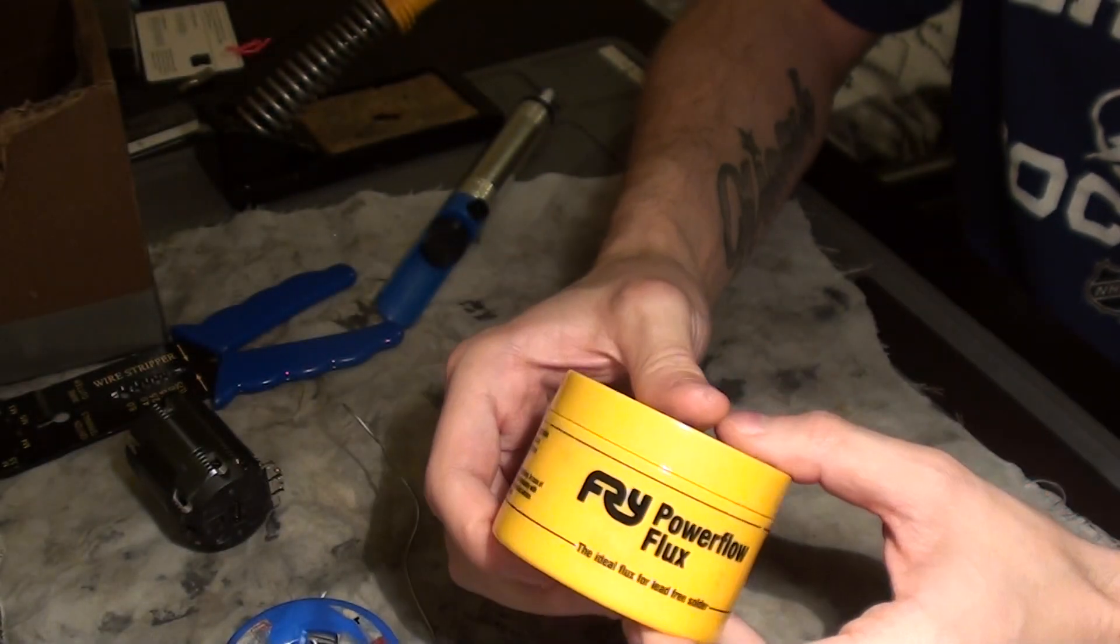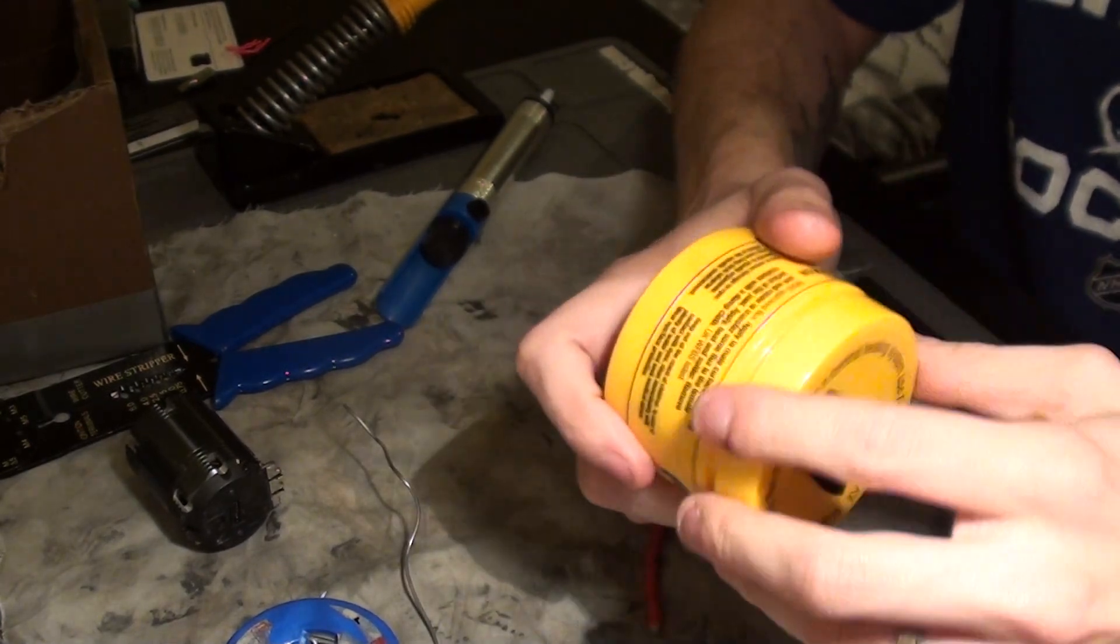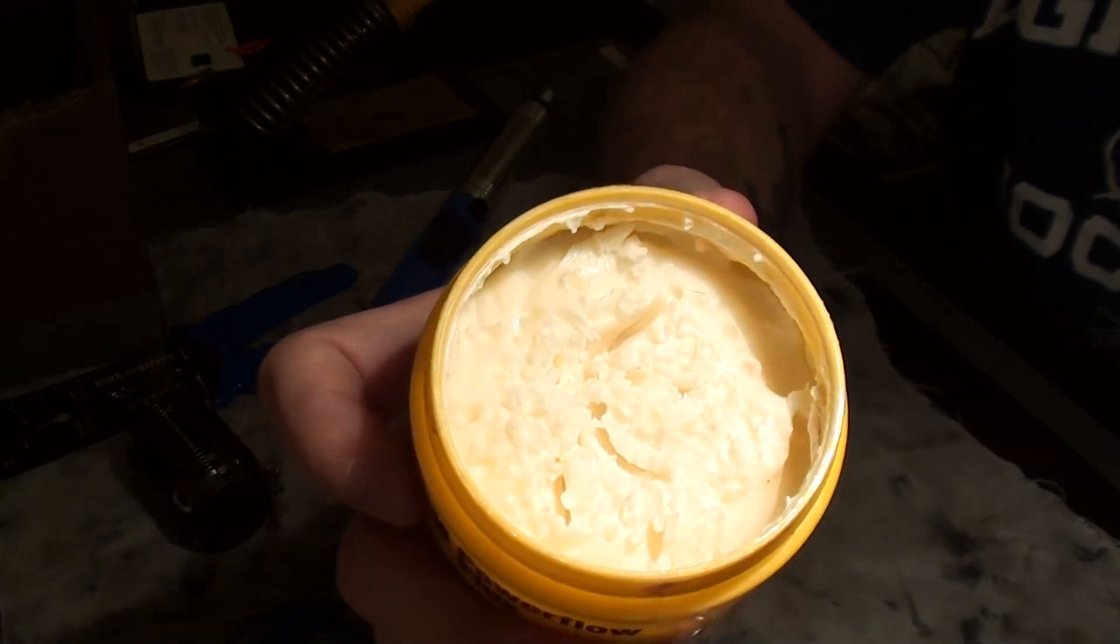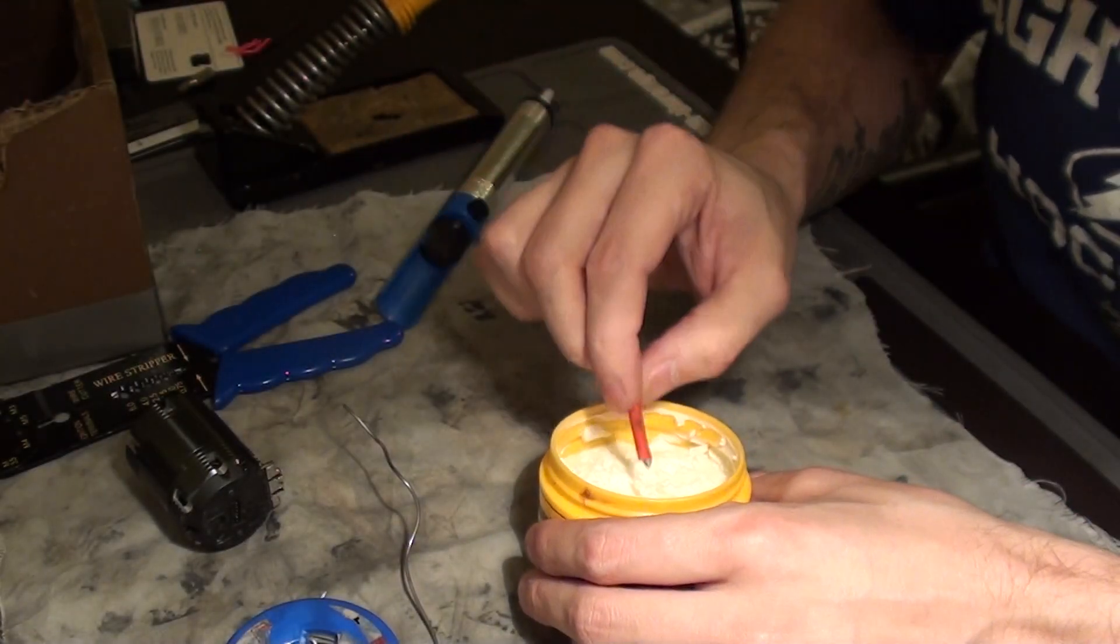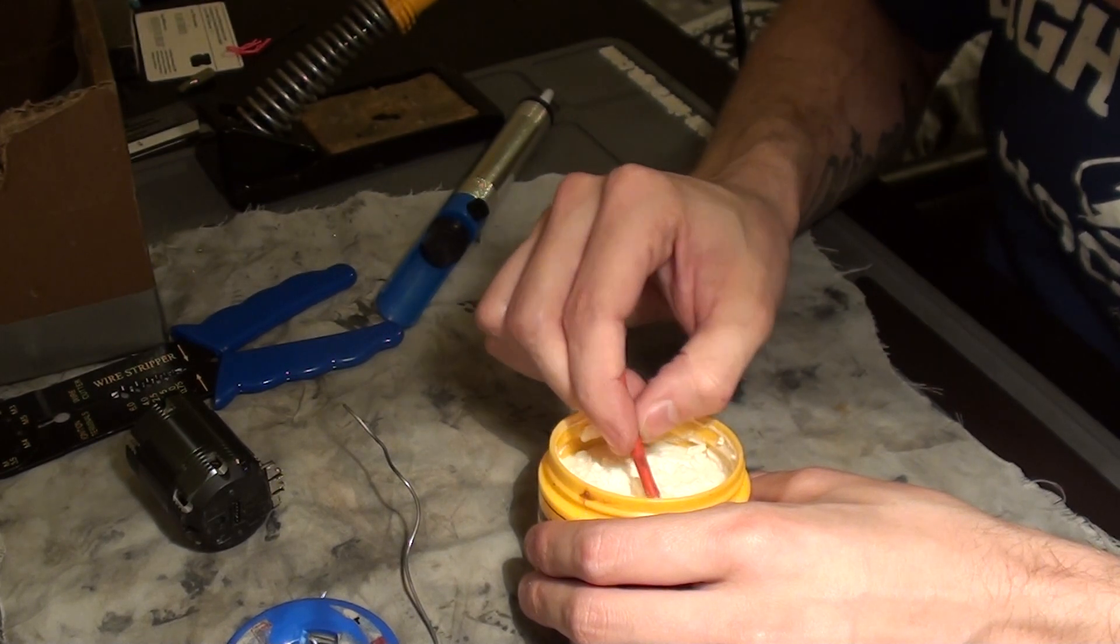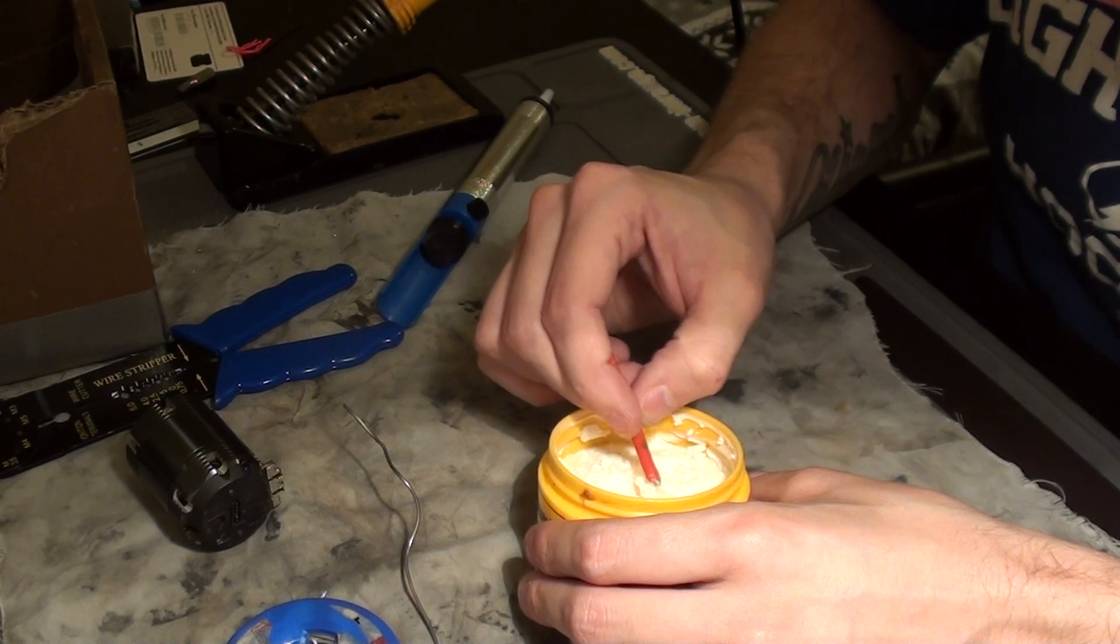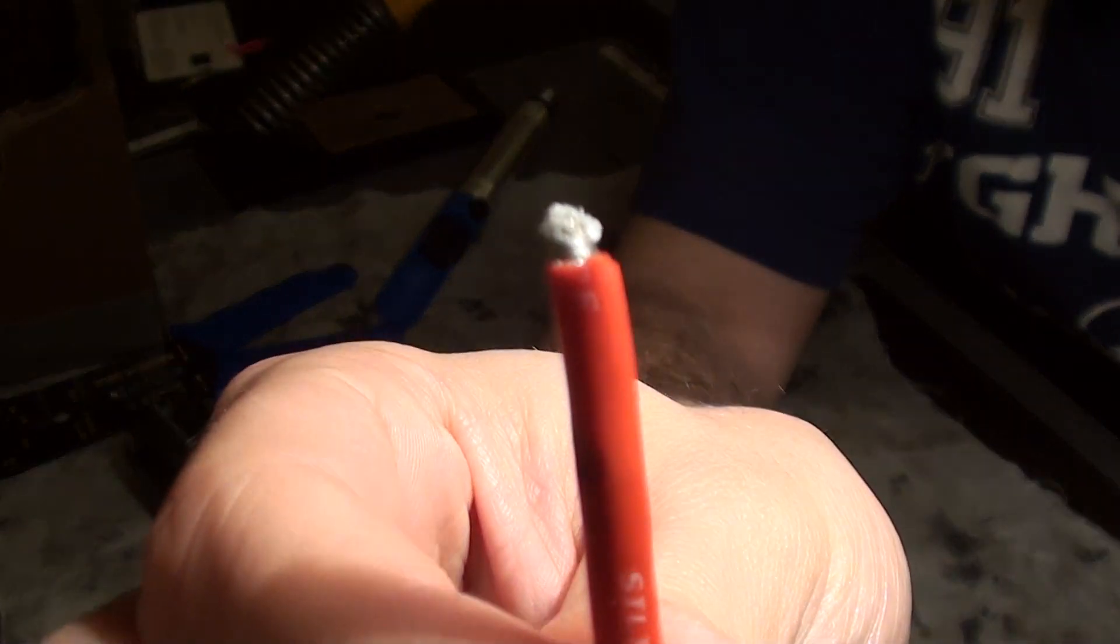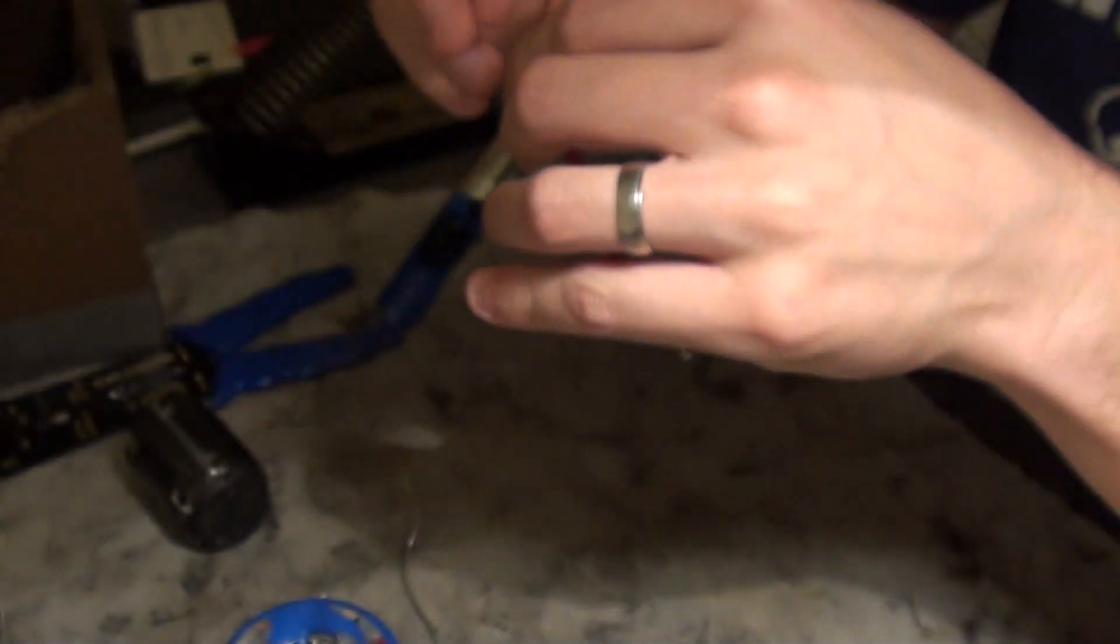Next, I take flux. As you can see, dipped a lot of wire in this before. I take the wire and dip it in. Just get enough on the end of it. It doesn't have to be a lot. As you can see there, that is more than enough. And then you just wind that into it.